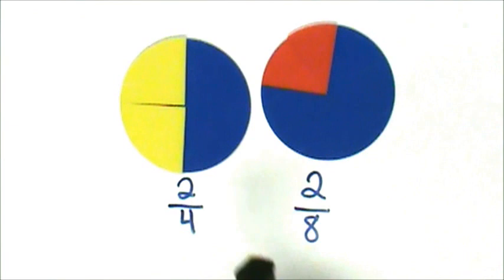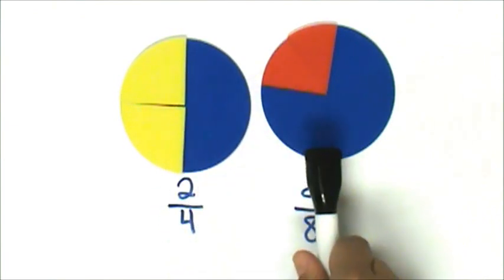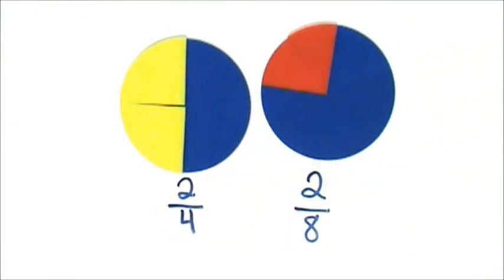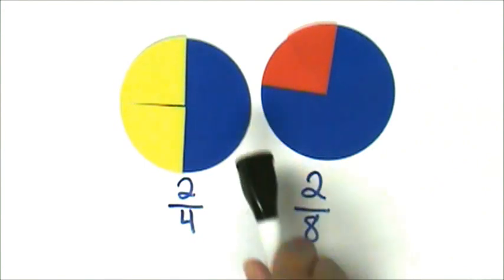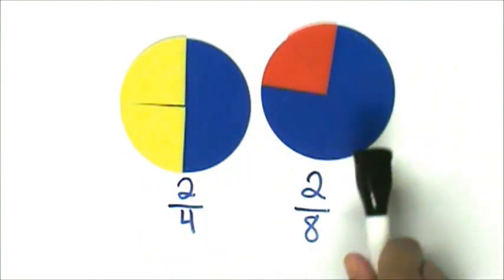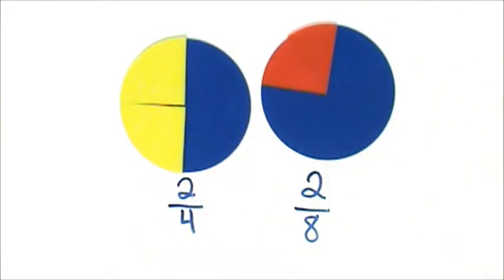I can see that two-fourths and two-eighths are not the same size and they do not cover the same portion of the whole. Let's double check by placing two-eighths on top of two-fourths.